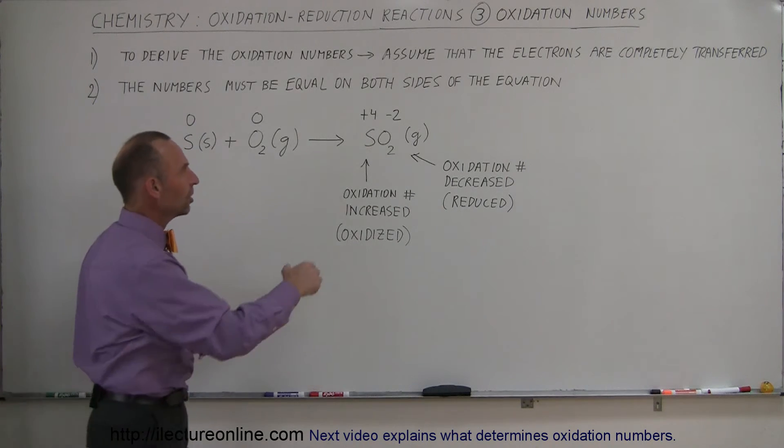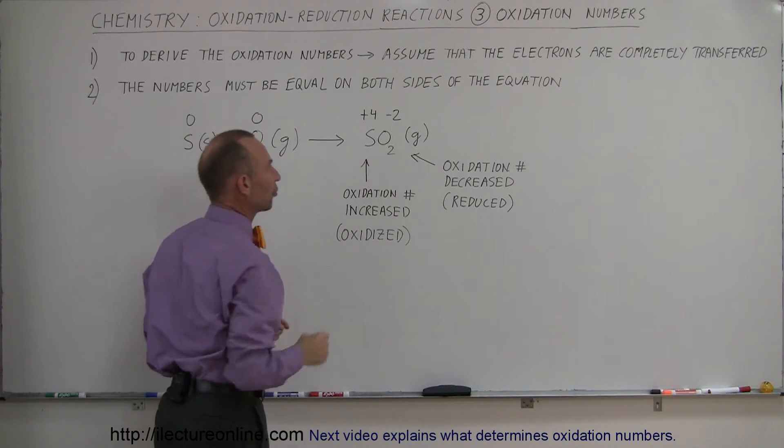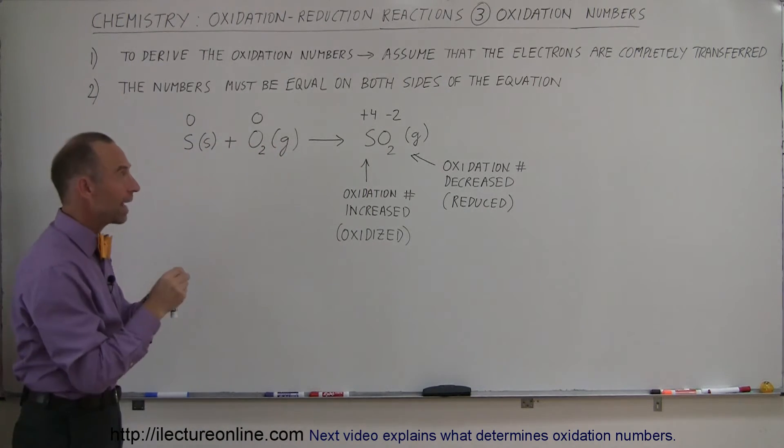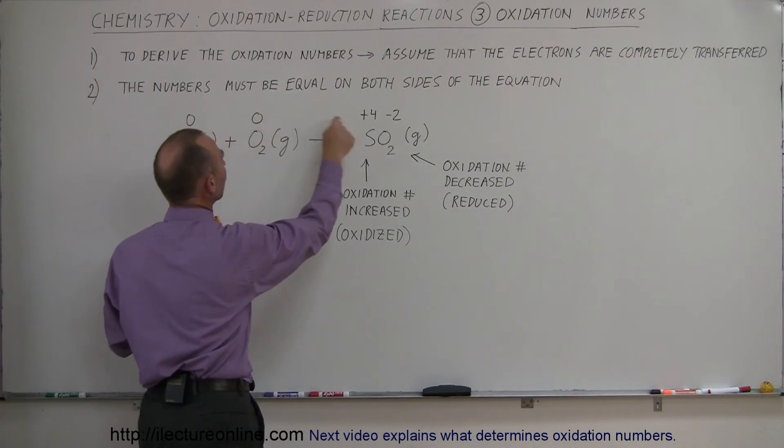You can see that the oxidation number has increased from zero to four for the sulfur, which means that one sulfur atom has donated four electrons. Therefore the oxidation number went from zero to four.